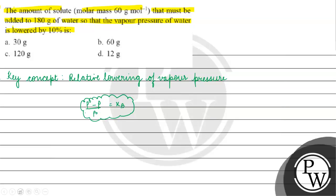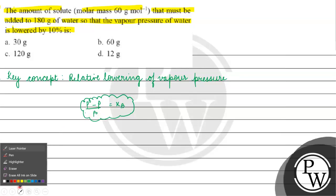P0 is the vapor pressure of the pure solvent, and P is the vapor pressure of the solution. We call this 'relative lowering' because the lowering of vapor pressure is related to (expressed relative to) the vapor pressure of the pure solvent. This is why it is called relative lowering.